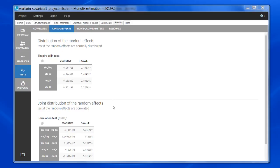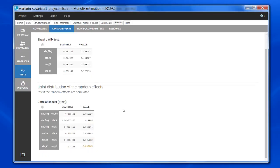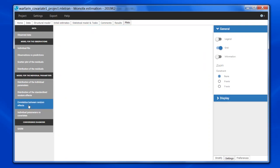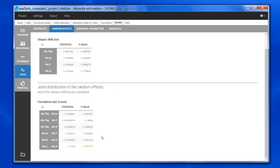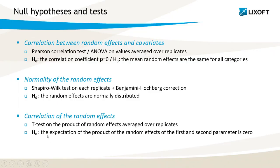The next test is displayed below. It tests for the correlation for each pair of random effects in complement to the plot correlation between random effects. These tests are particularly useful to choose which correlation should be estimated as part of the population parameters. The null hypothesis of this test is that the expectation of the product of the random effects for the first and second tested parameters is zero. This is tested using a t-test.